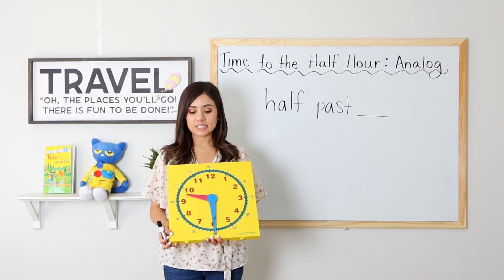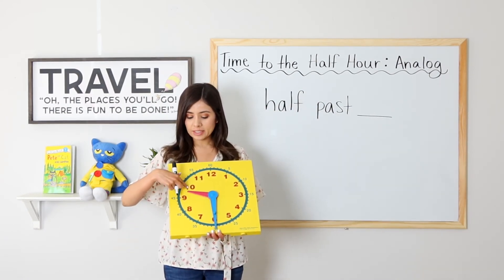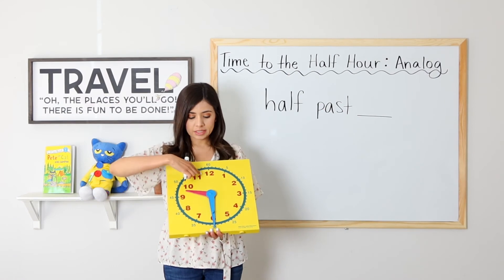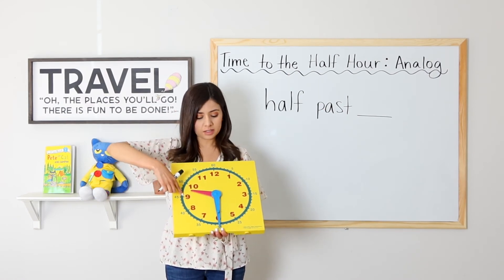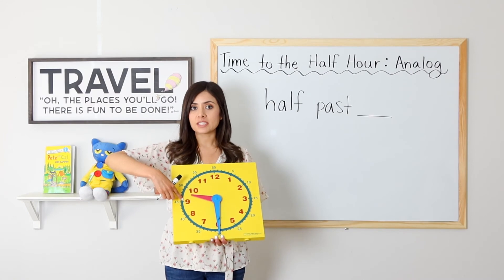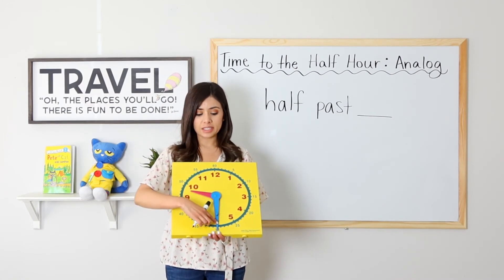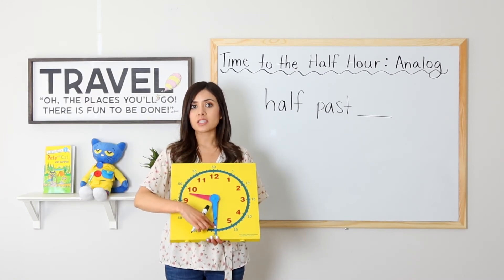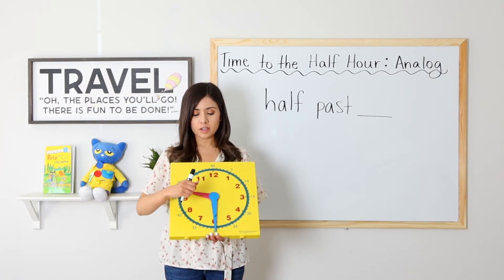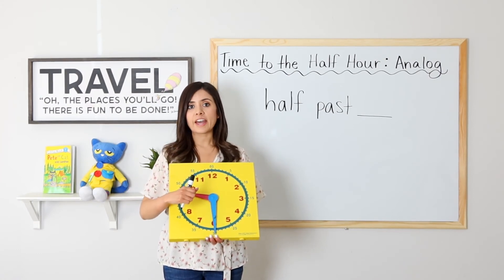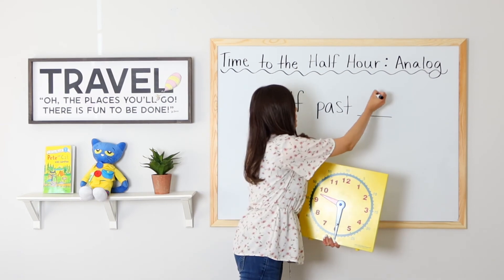For this example, our hour hand is between the nine and the ten. It's coming this way to the nine and has not touched the ten yet, so it is still nine. Our minute hand is on the six, so that is thirty. Nine thirty, or half past nine.